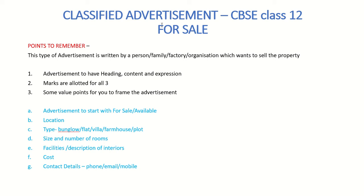The first advertisement is for sale. This type is written by a person, family, factory, or organization that wants to sell property. Remember that an advertisement should have three things: heading, content, and expression. The heading is what you write at the top, content is everything written in the advertisement, and expression is how well you write within the limited word count. Marks are allotted for all three.